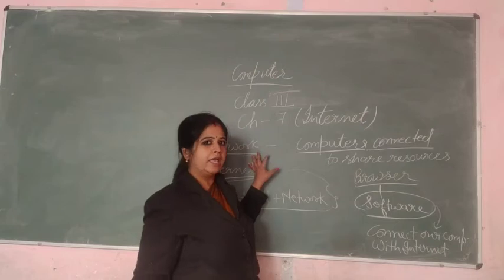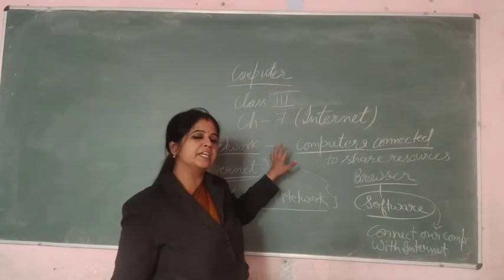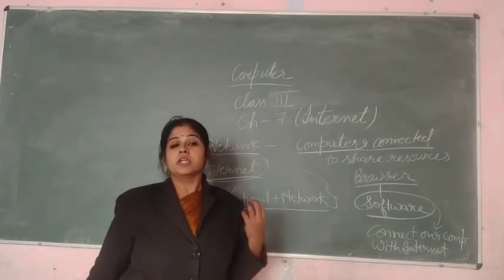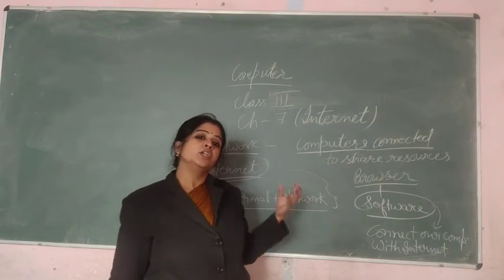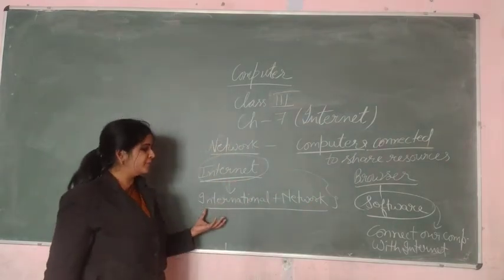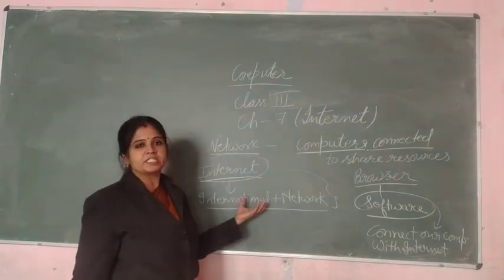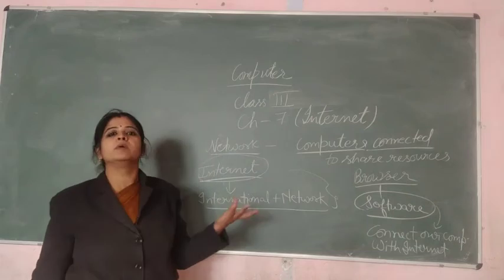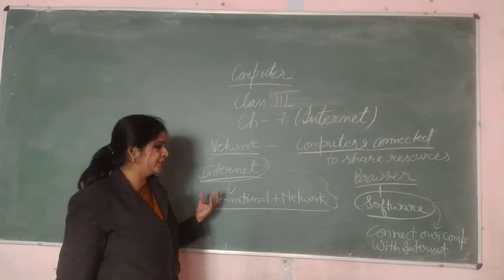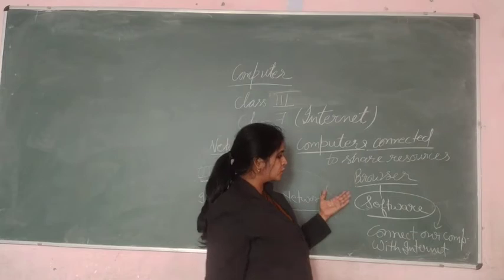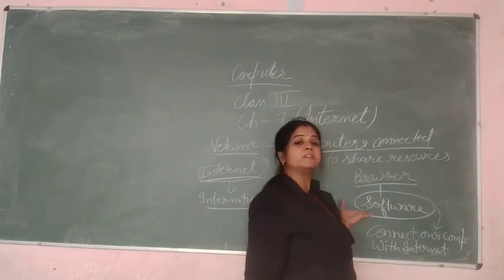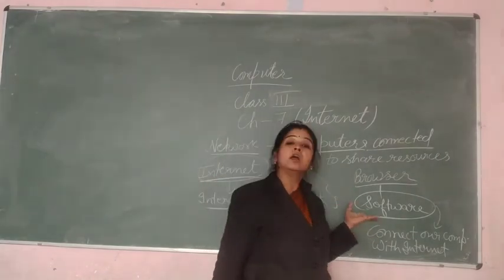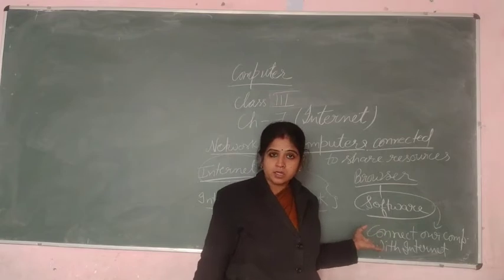Network: connected computers are called a network, and it is used for resource sharing. Internet is made of two words — international and network — meaning a globally connected network of computers. Browser is a software which is used to connect or search information on your computer.